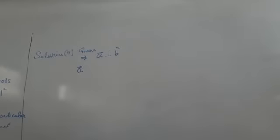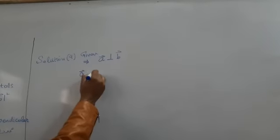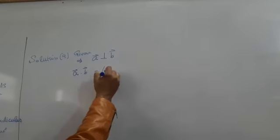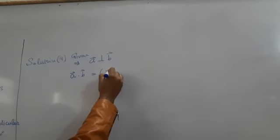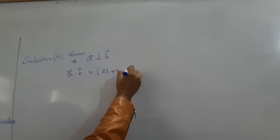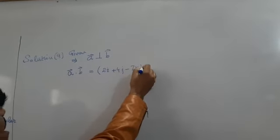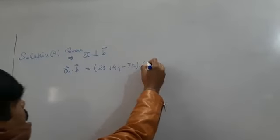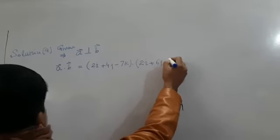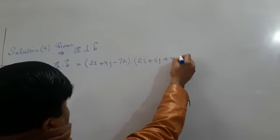Then we can solve the question. A·B equals zero. Put the vectors: (2i+4j-7k)·(2i+6j+xk).